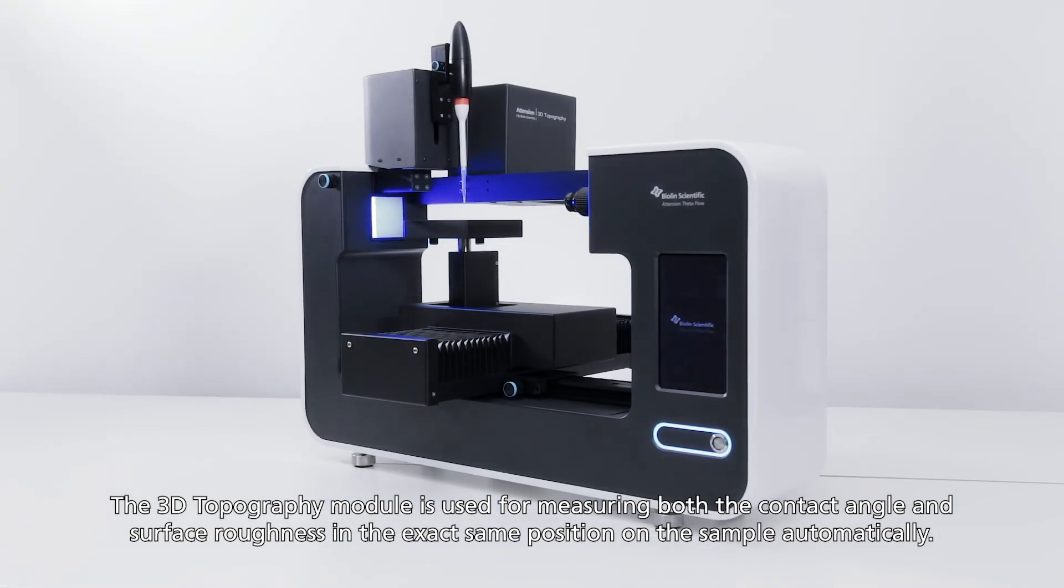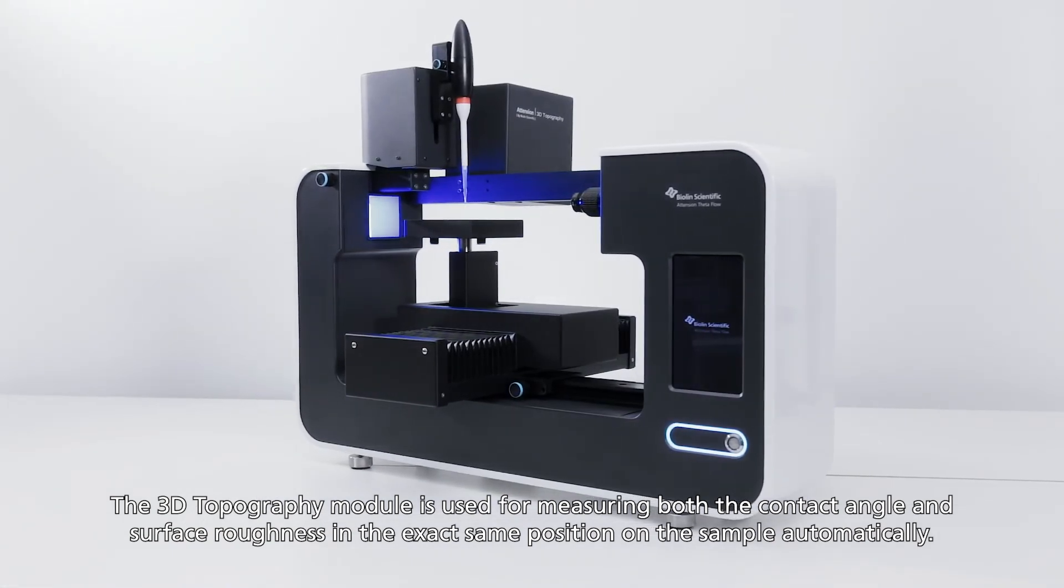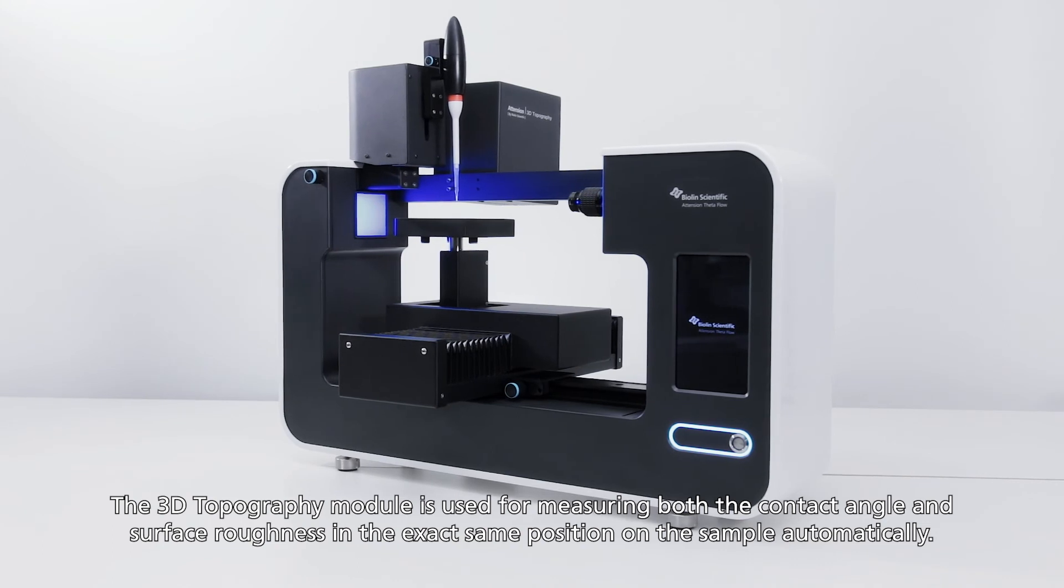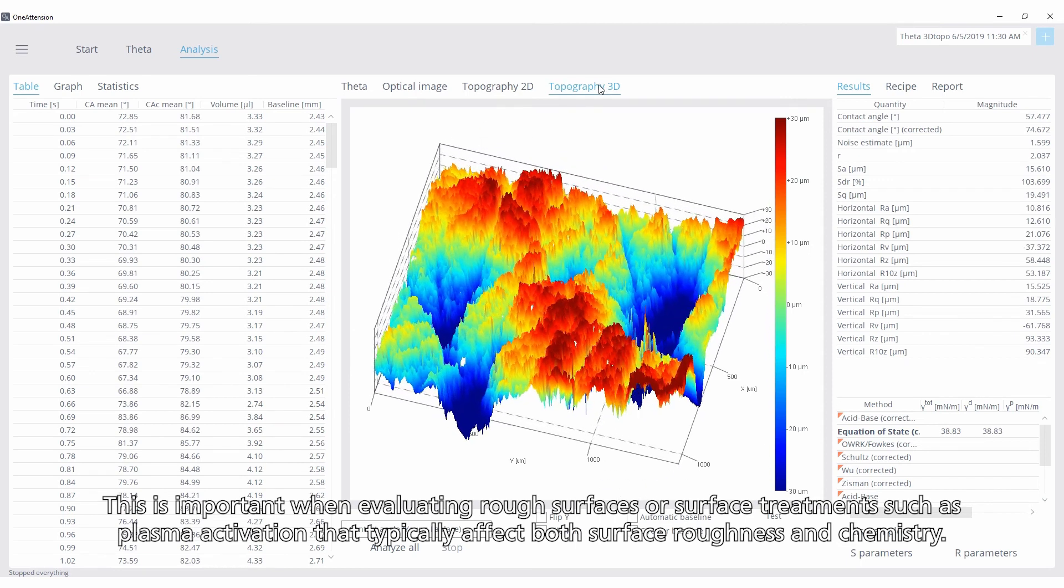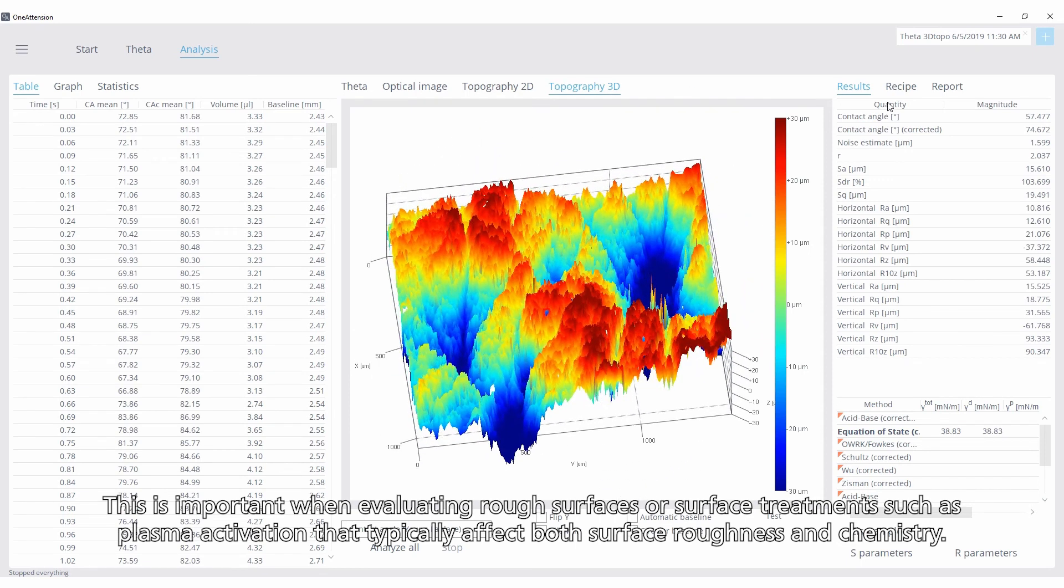The 3D topography module is used for measuring both the contact angle and surface roughness in the exact same position on the sample automatically. This is important when evaluating rough surfaces or surface treatments such as plasma activation that typically affect both surface roughness and chemistry.